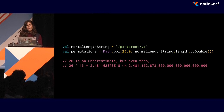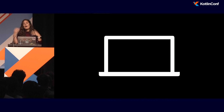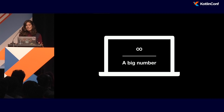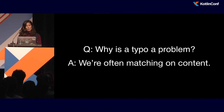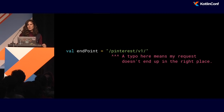Now I know at least one person in the audience is good at math, probably majored in statistics, and is saying that's not really accurate because of keyboard layouts. And yes, it is very unlikely that if I'm typing a string over here I magically start typing strings over here. But infinity divided by a large number is still a heck of a lot of ways to screw up. Why do we care? Because we're often matching on content — when I make a typo in a string, my data doesn't go where it needs to go, and my states don't transition the way they need to transition.